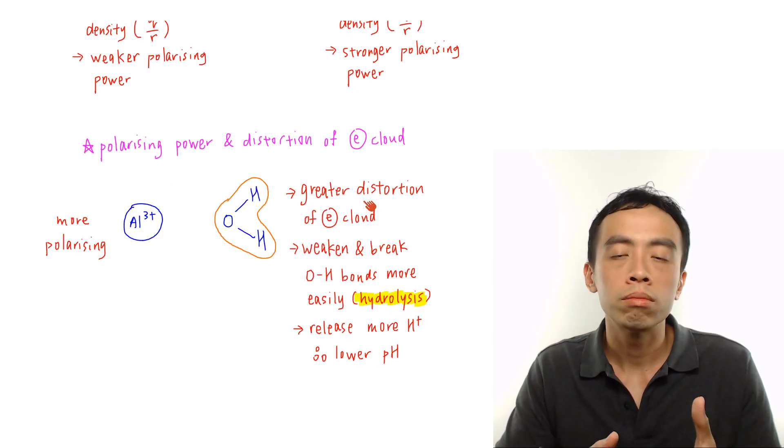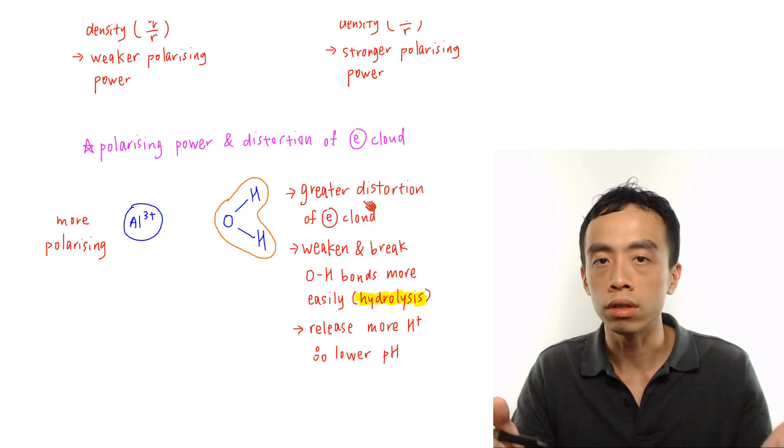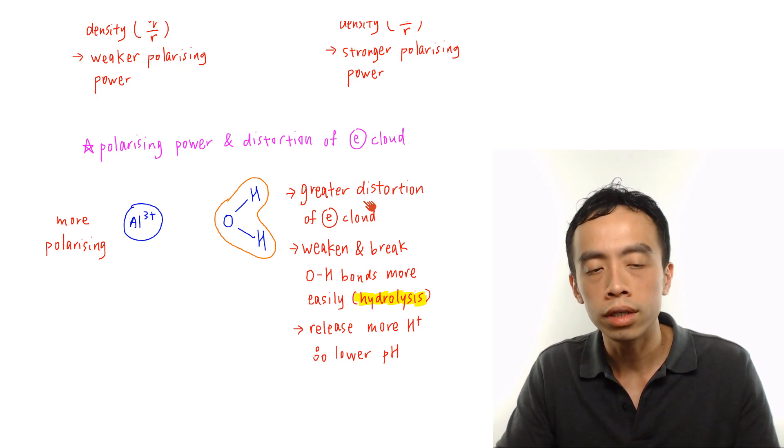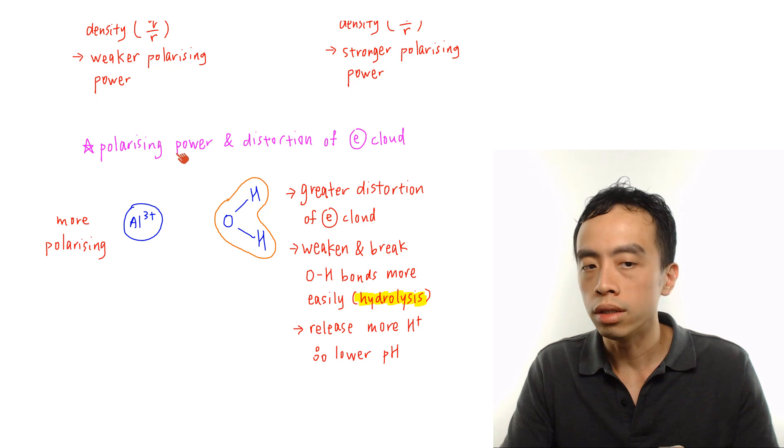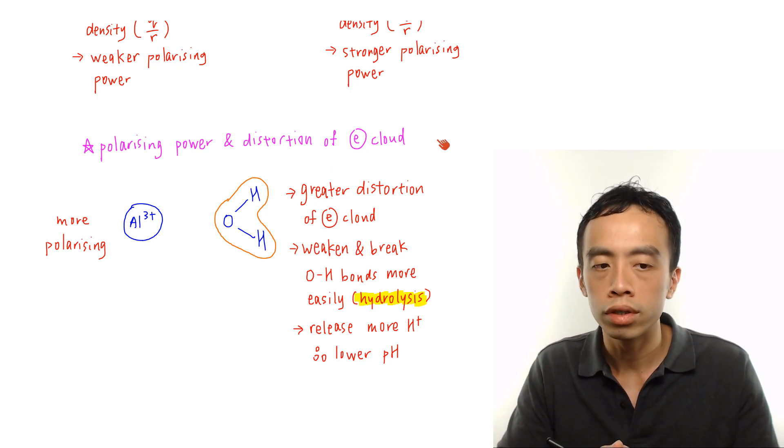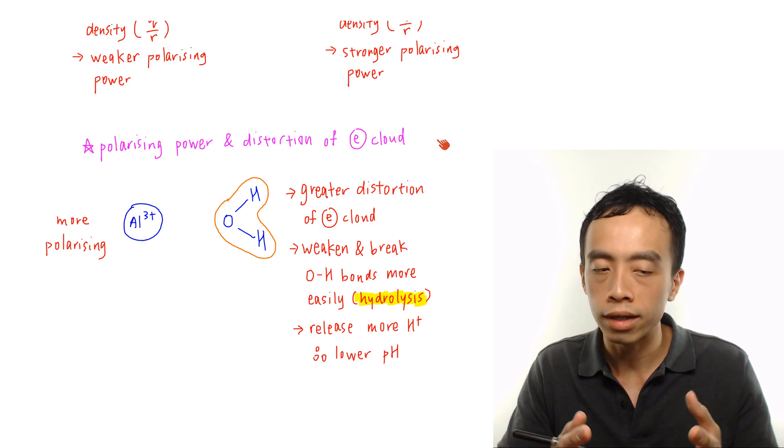Now what has polarizing power got to do with the pH of the solution? Now for the case of metal chlorides dissolved in water, the polarizing power is linked to the distortion of electron cloud of water molecules.